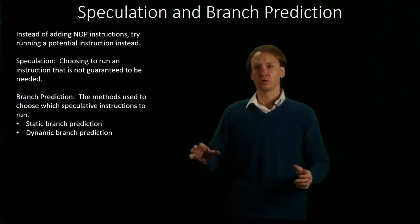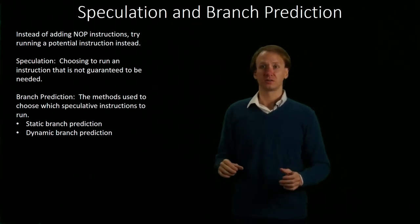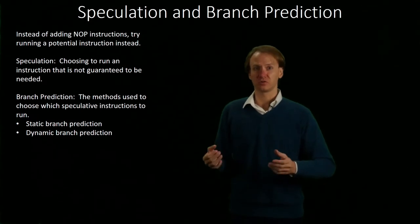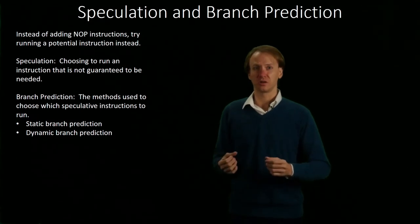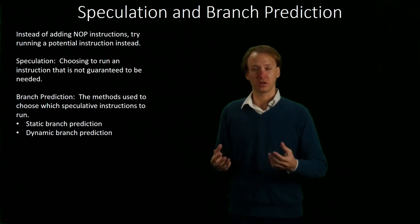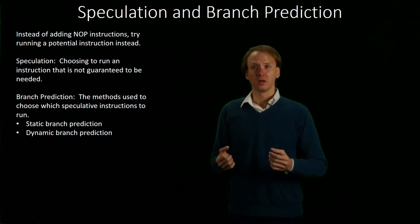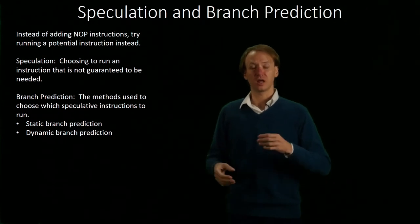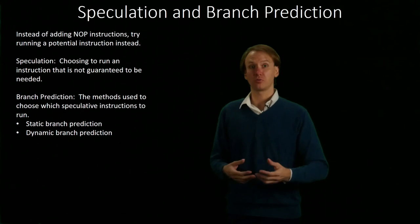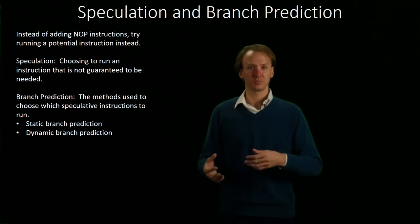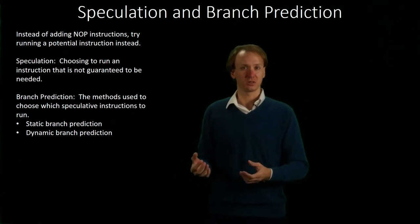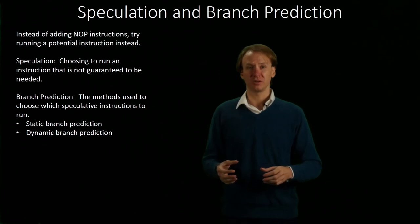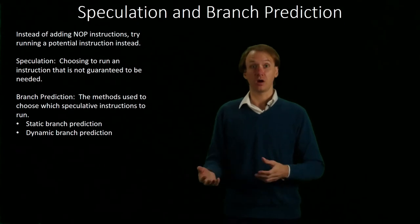We will look at static branch prediction, because those are nice, simple schemes — they don't change based on the code. Dynamic branch prediction, on the other hand, looks at how the code is run, what it's done, what this branch has done recently, and makes decisions about whether this branch is likely to be taken again or not.